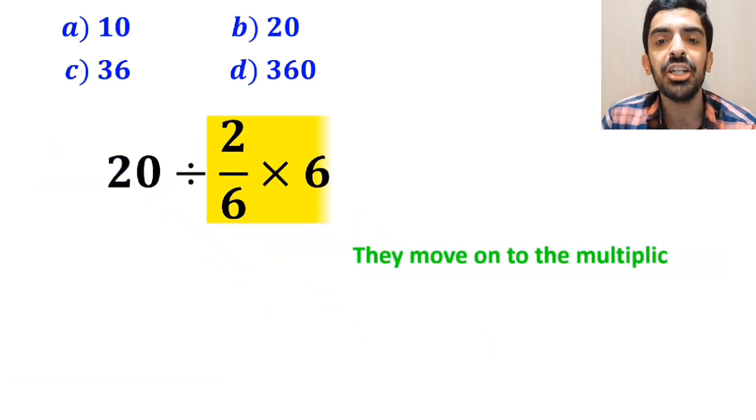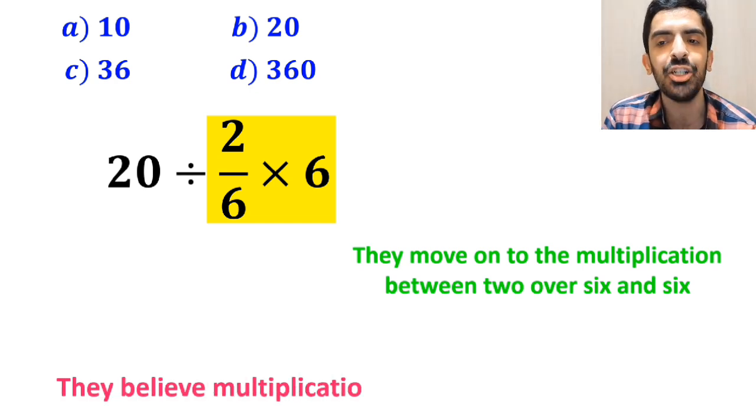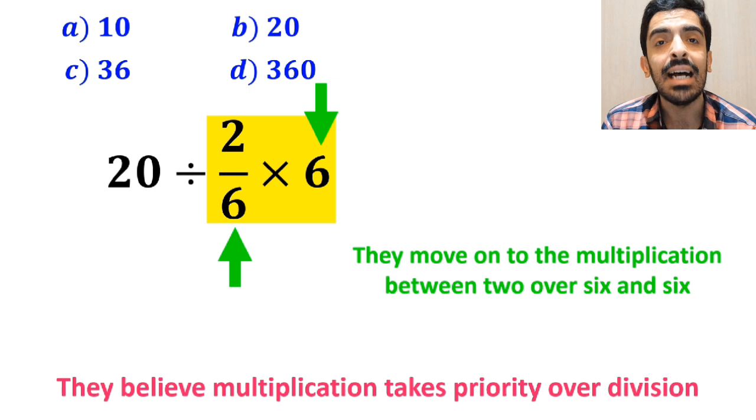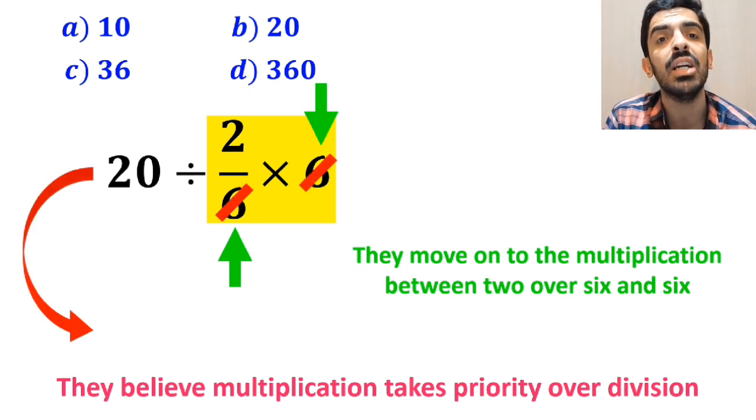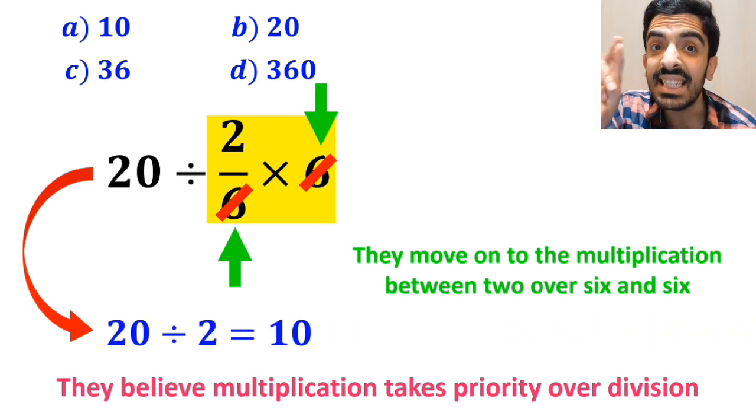Then, they move on to the multiplication between 2 over 6 and 6 because they believe multiplication takes priority over division. As you can see in the image, they simplified the number 6 with the 6 in the denominator and instead of the original expression, they will write it as 20 divided by 2, which finally gives them the answer 10.